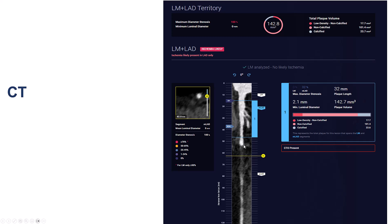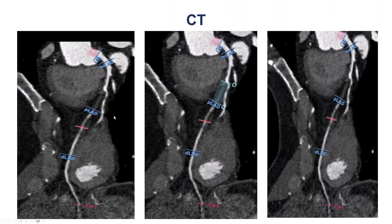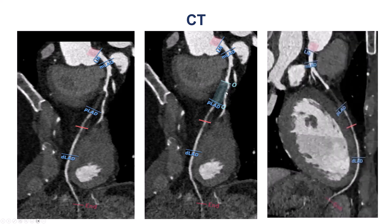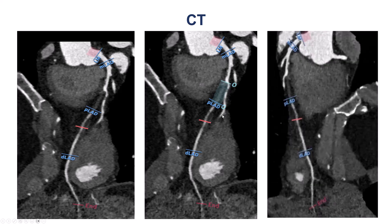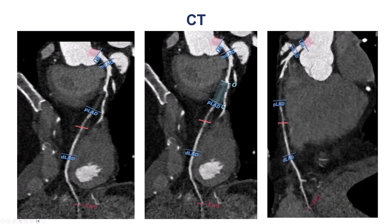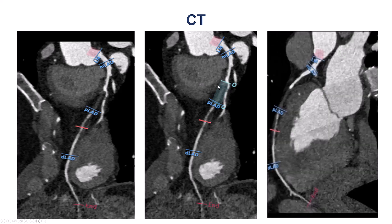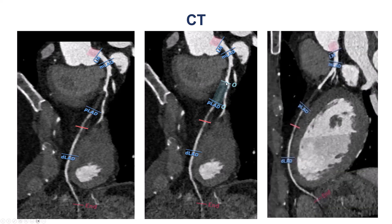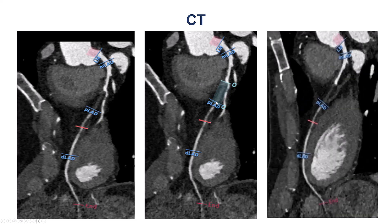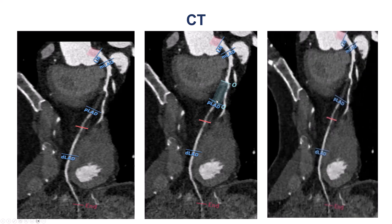Looking at a different software, the ClearLy software, we have the LAD CTO — it is soft plaque, and the CTO is located just after the takeoff of the diagonal branch. The software automatically detects the CTO and provides the length.